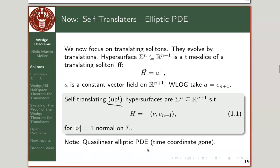This is an elliptic differential equation — a partial differential equation — because the time coordinate has been fixed. All these time slices are by definition translates of each other, so it suffices to look at this time slice and the elliptic PDE.